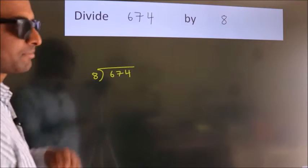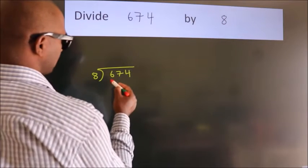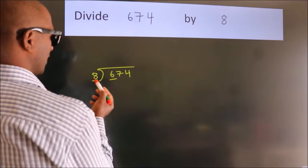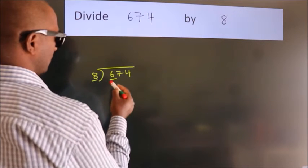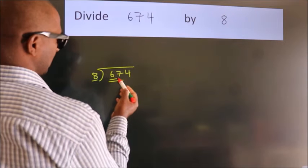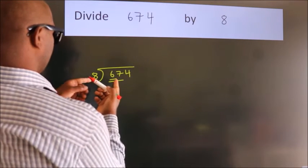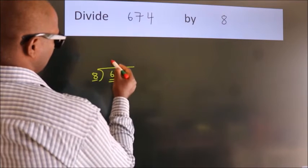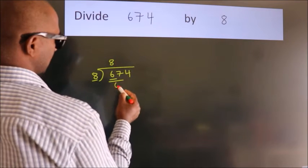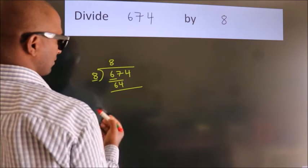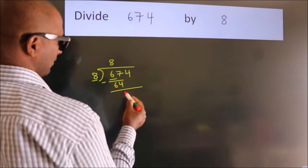Next, here we have 6. Here 8. 6 is smaller than 8, so we should take two numbers. 67. A number close to 67 in the 8 table is 8 times 8 equals 64. Now we should subtract. We get 3.